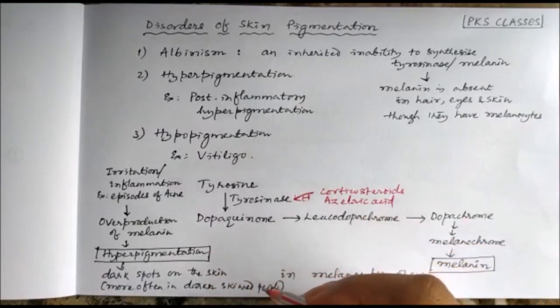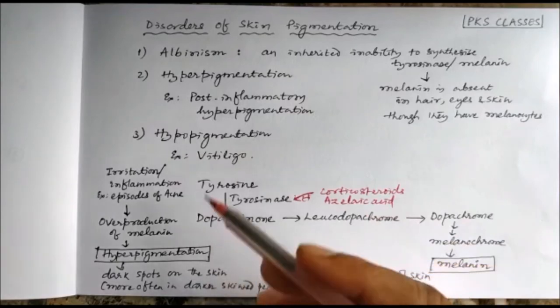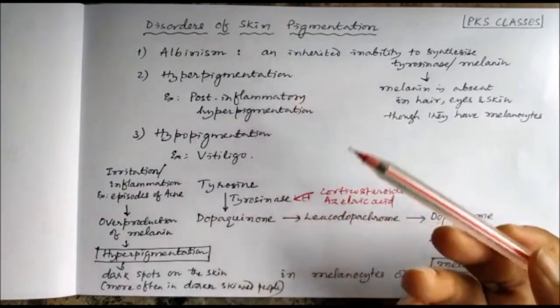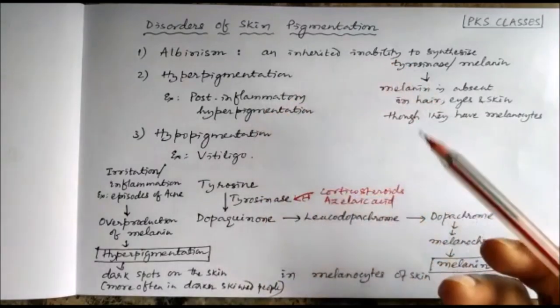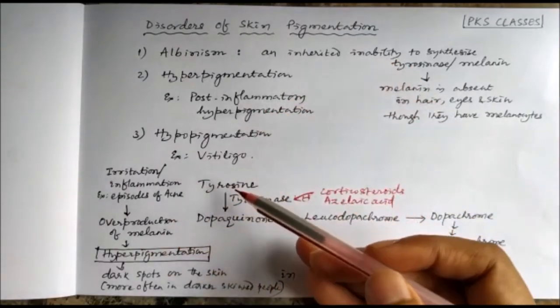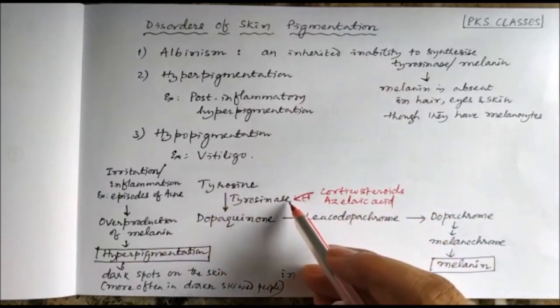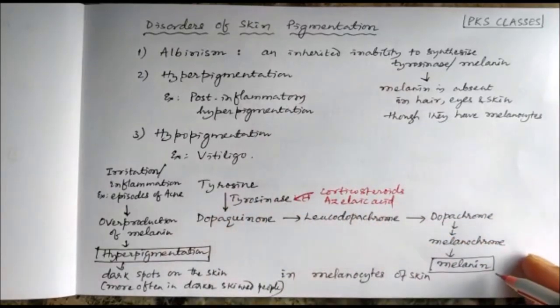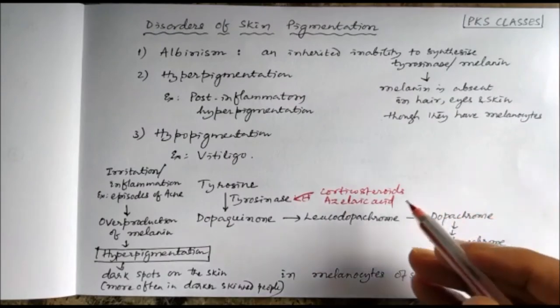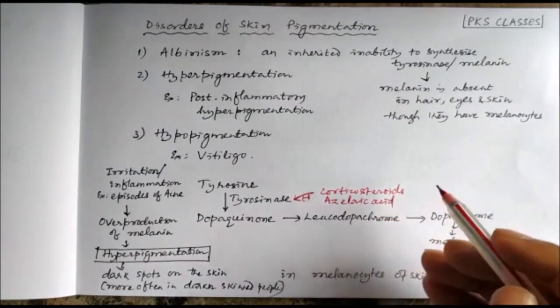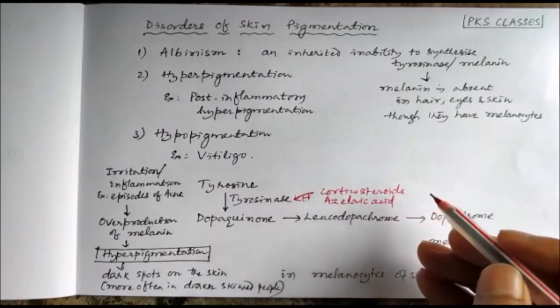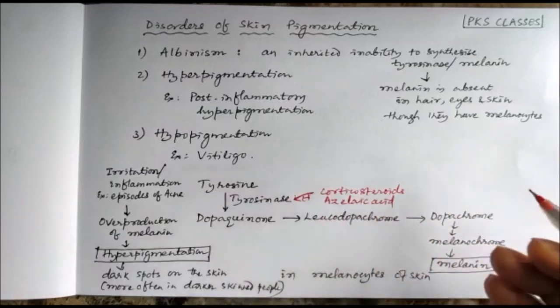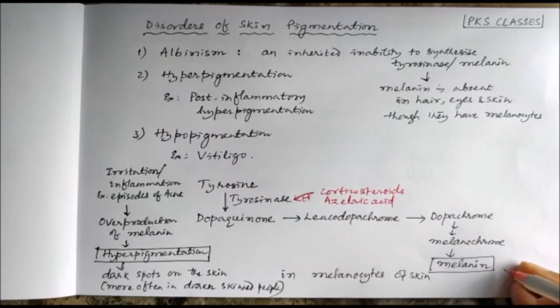More often in darker skin people there will be hyperpigmentation. To treat that, we can use tyrosinase inhibitors so that melanin synthesis can be inhibited. These include azelaic acid and corticosteroids, which can inhibit tyrosinase activity and decrease the synthesis of melanin.